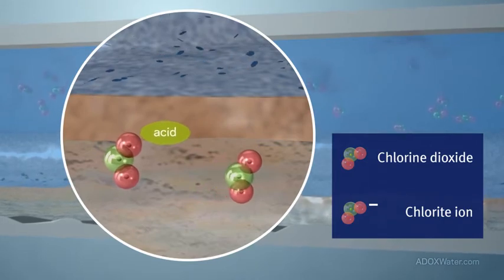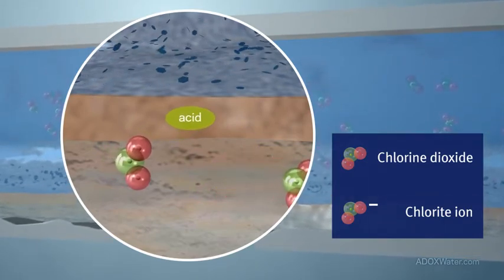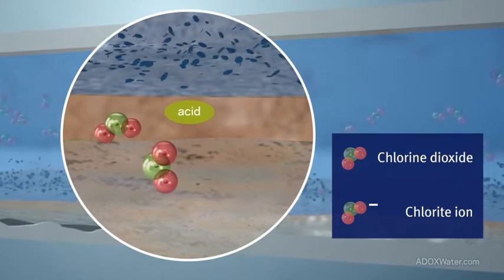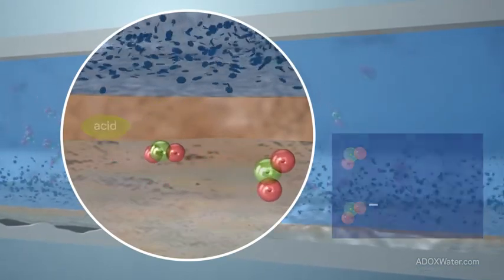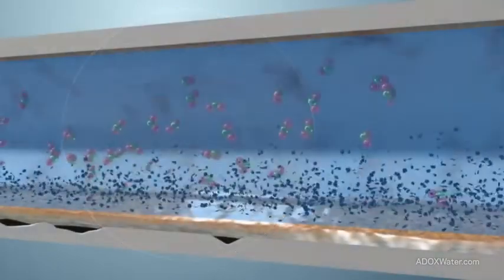In effect, a cycle of chlorine dioxide consumption to chloride ion and partial regeneration back to chlorine dioxide is possible in many biocidal applications, including biofilm control.